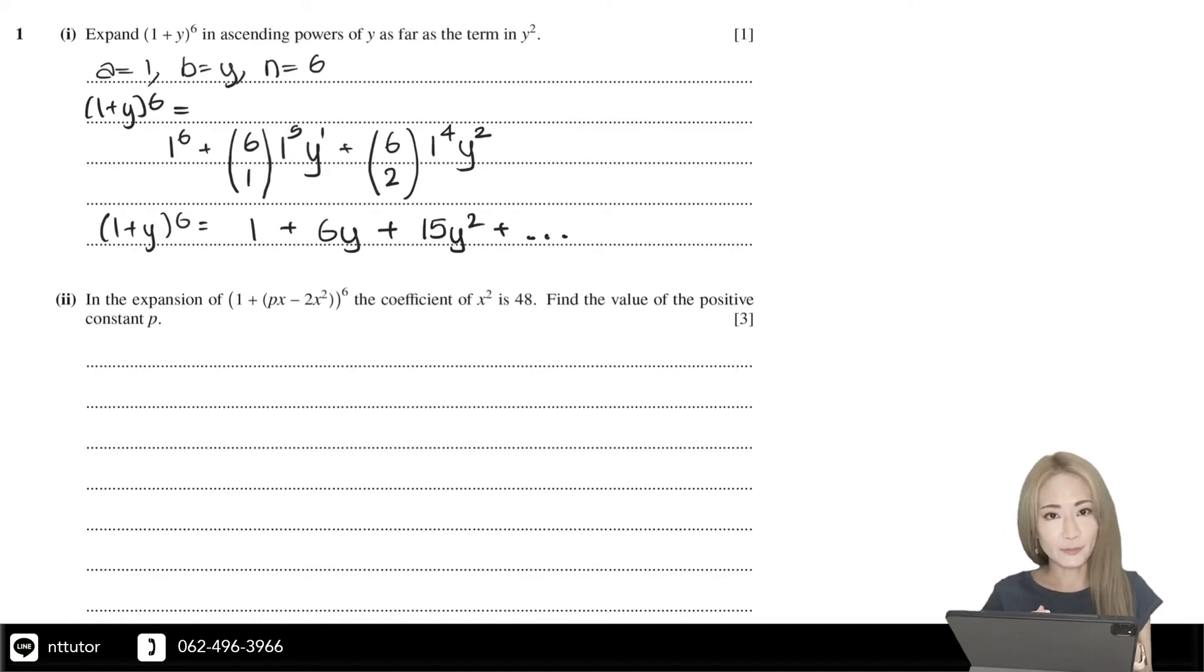The information given is that the coefficient of x² is 48. So we need to find an expression for the coefficient of x² in terms of p and use that to solve for the value of p.